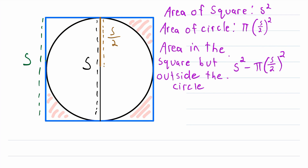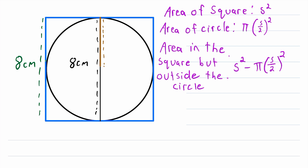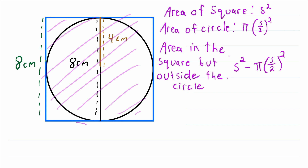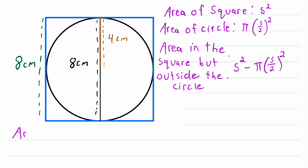That's really all there is to it for these area calculations. Let's do an example. Let's say the side length of this square is eight centimeters. The diameter length of the circle is also eight centimeters, which means the radius length is eight centimeters divided by two — just four centimeters. The area of the square is equal to the side length squared, so eight centimeters squared, which is 64 centimeters squared.